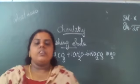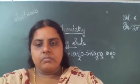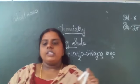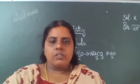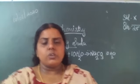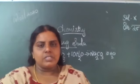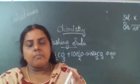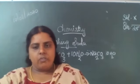Uses of washing soda: first, it is used for making soap, paper, and glass industries. Second, it is used in laundries for cleaning clothes, and in our house we also use washing soda. It is also used for preparation of sodium compounds like borites, and for removing the permanent hardness of water.